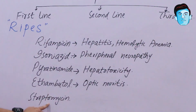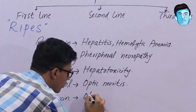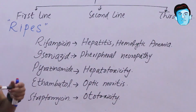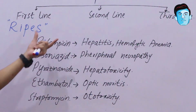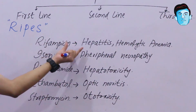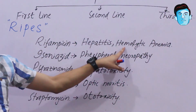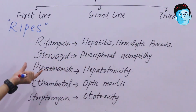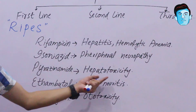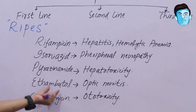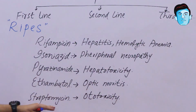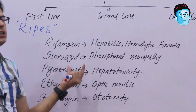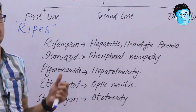The main side effect of Ethambutol is optic neuritis. The main side effect of Streptomycin is ototoxicity. So to summarize: Rifampicin → hepatitis and hemolytic anemia; Isoniazid → peripheral neuropathy; Pyrazinamide → hepatotoxicity; Ethambutol → optic neuritis; Streptomycin → ototoxicity.